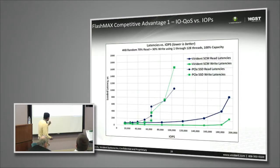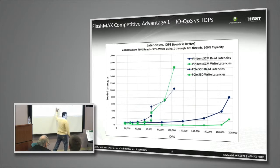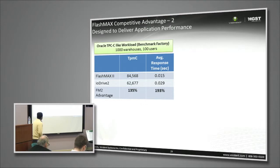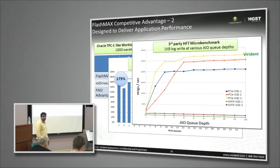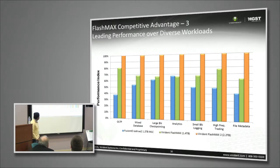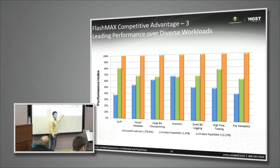As discussed, we are designed for multi-threaded, multi-queue-depth environments. This loaded latency chart shows that when multi-thread operations are running, the gap between us and the competition is huge. Where do we shine? Look at the Oracle TPCC benchmarks, TPCH benchmarks, and high-frequency trading benchmarks — we shine. Here we compare FlashMax second generation, first generation, and Fusion IO. The blue bars are Fusion IO and the others are us. Across applications from OLTP to high-frequency trading and file metadata, we shine everywhere.